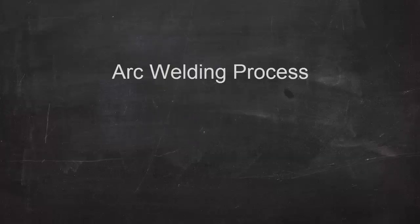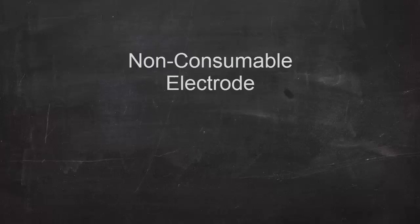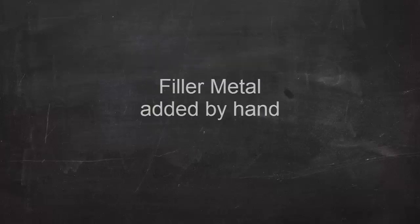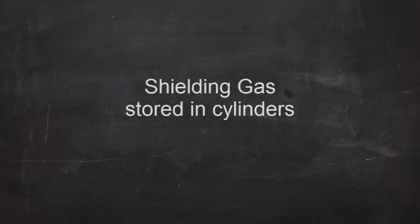So, in summary, TIG welding is an electric arc welding process, uses a non-consumable tungsten electrode, the filler metal is added separately in the form of filler rod, and the shielding gas comes from a high-pressure cylinder.